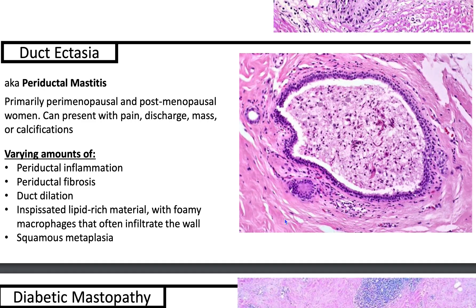Let's talk about duct ectasia, also known as periductal mastitis. It's predominantly seen in perimenopausal and postmenopausal women. Clinical symptoms include pain, discharge, mass, or calcifications. The histologic features include varying amounts of periductal inflammation with lymphocytes, periductal fibrosis, duct dilation, inspissated lipid-rich material with foamy macrophages that often infiltrate the wall, as well as squamous metaplasia.